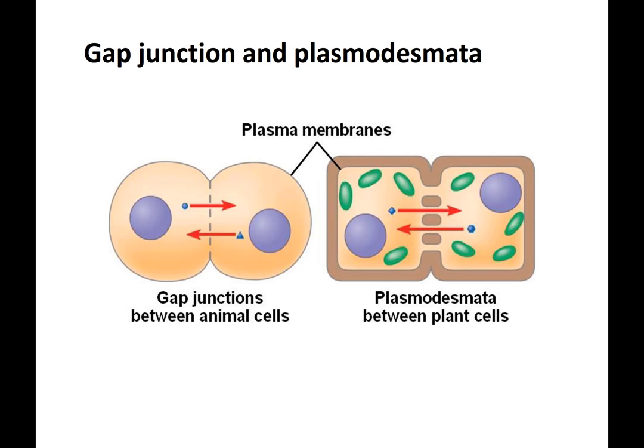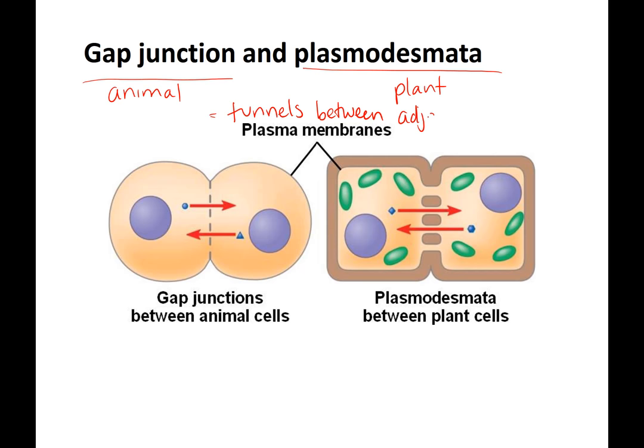The first type of junction is gap junctions in animal cells and plasmodesmata in plants. Make sure you know plasmodesmata — it'll be on the exam. They're both similar: they are tunnels between adjacent, meaning next to each other, cells. These are tunnels connecting the cells and allowing molecules to move across between neighboring cells.